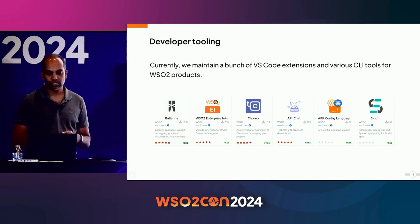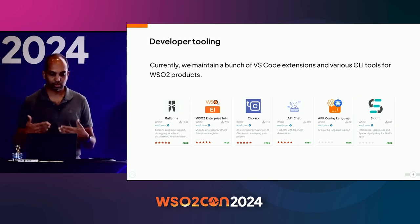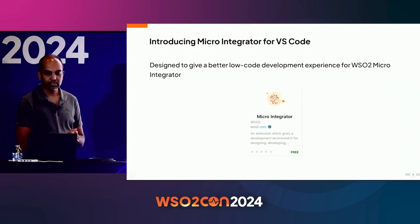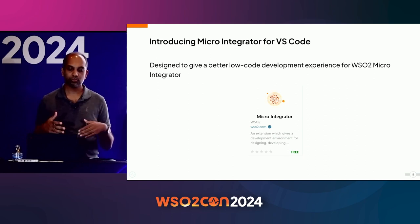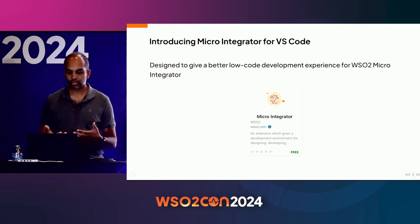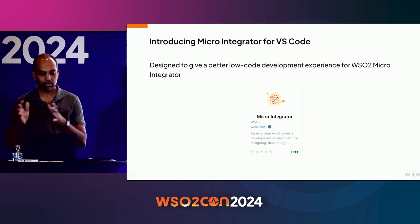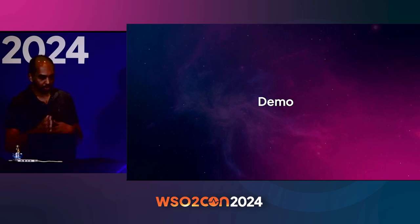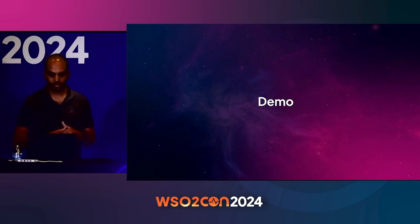Coming to the present, we now maintain a bunch of VS Code plugins for our various products, built to improve the development experience. The latest addition to our list is the Micro Integrator VS Code plugin. The idea behind it was to rethink how to do low-code integration — we didn't want to just port the existing Enterprise Studio to VS Code, but reimagine how we can write low-code integration better. Let me do a quick demo so you can get a feel for the experience with the new extension.